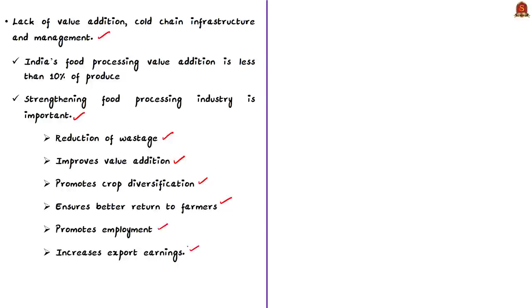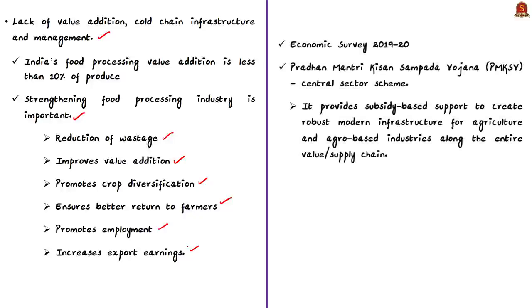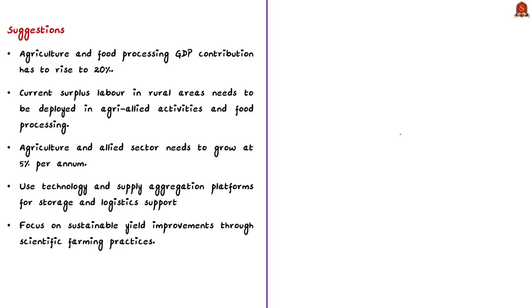To boost this sector, the government has restructured its schemes under a new central sector scheme called Pradhan Mantri Kisan Sampada Yojana. It provides subsidy-based support to create robust modern infrastructure for agriculture and agro-based industries along the entire value or supply chain. We will now discuss some important solutions to make the agriculture sector sustainable.